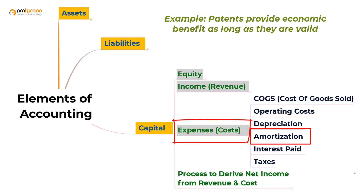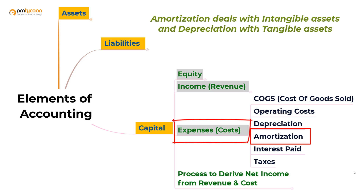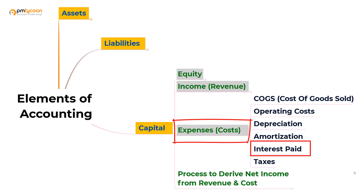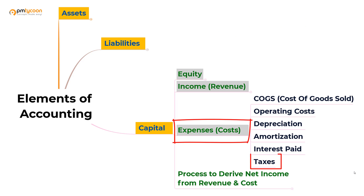These intangible assets hold value as long as they are valid. When a patent expires, it holds no value because no one will buy it to produce the product exclusively. As long as the company has a patent, no one else can produce that product — that is why the patent holds value. But when the patent expires, anyone can make those products. So amortization deals with intangible assets. Interest paid is the amount of interest that a company pays for loans taken for running business operations. Every year the firm is obliged to pay the interest, which is recorded as a cost under interest paid expenses.